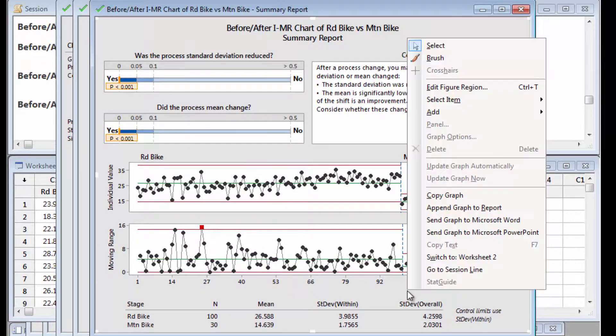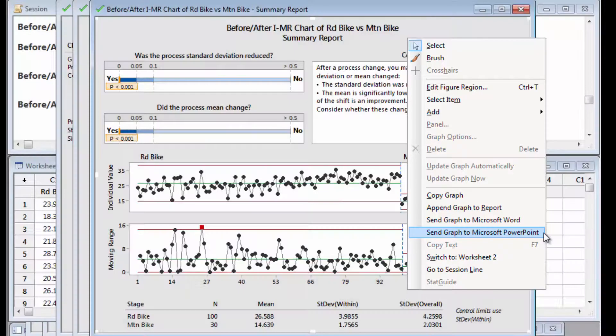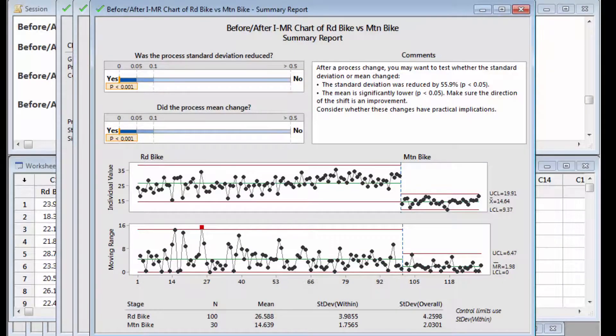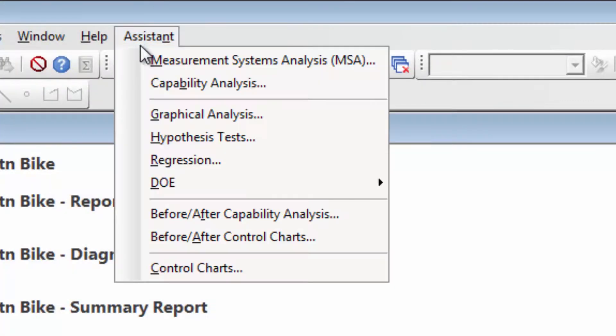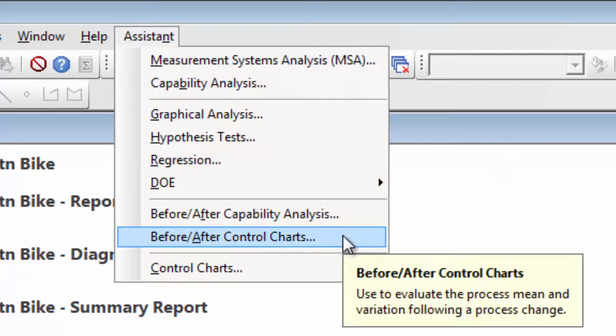With a right-click, Joel can export the summary report to Word or PowerPoint and send it to his boss. Whether you bike, drive, or walk to work, you've completed this analysis in a timely manner. You have seen how the Assistant can help you view the distribution of your data and create before and after control charts for your process.